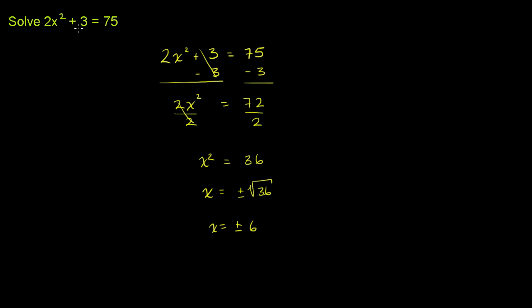And you could put them back into the original equation to verify it. Let's do that. If you say 2 times 6 squared plus 3, that's 2 times 36, which is 72, plus 3 is 75. So that works. If you put negative 6 in there, you're going to get the exact same result, because negative 6 squared is also 36. 2 times 36 is 72, plus 3 is 75.